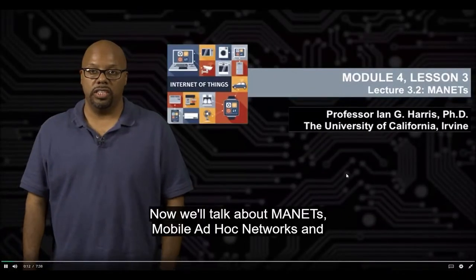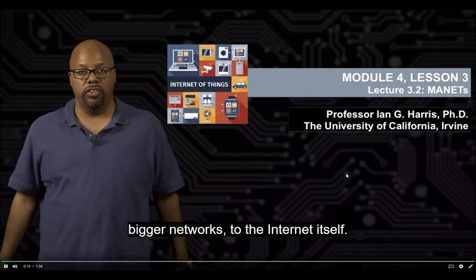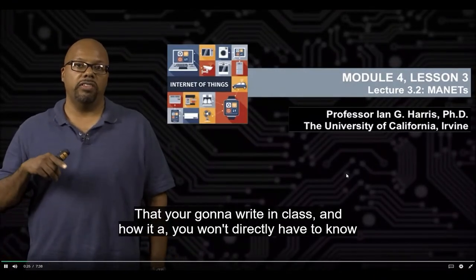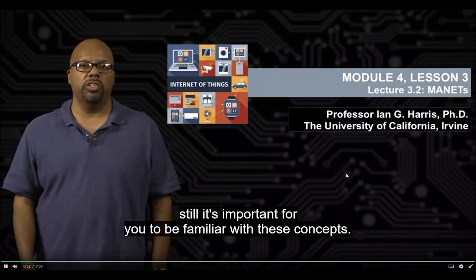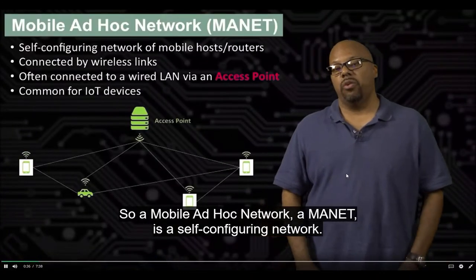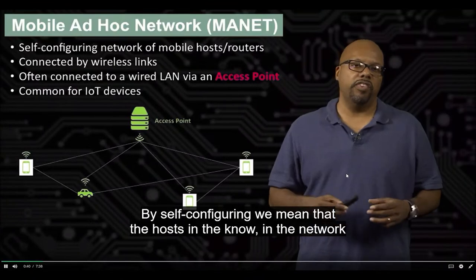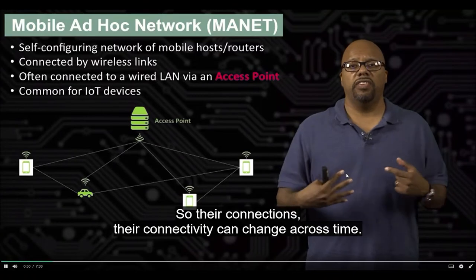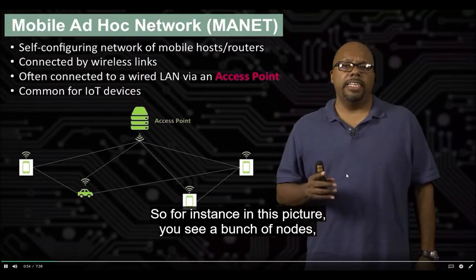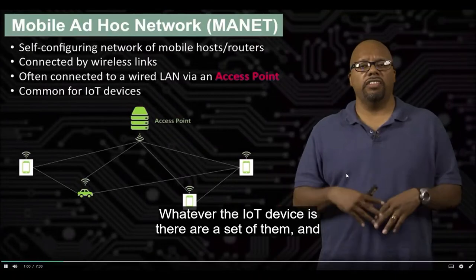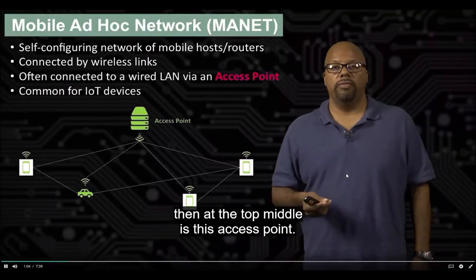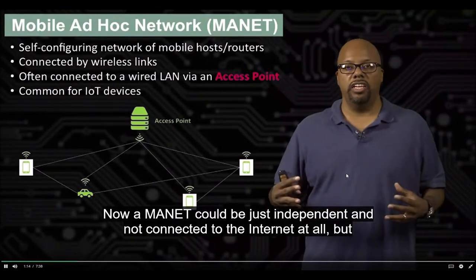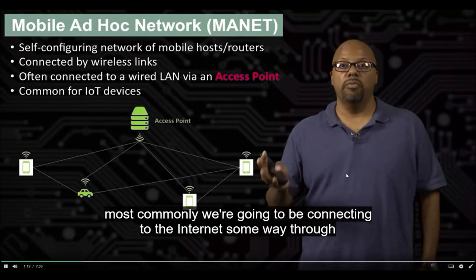Now we'll talk about MANETs — mobile ad hoc networks — and how they're used to connect Internet of Things objects to bigger networks and to the internet itself. A mobile ad hoc network is a self-configuring network, meaning the hosts configure themselves because they're moving around all the time, so their connectivity changes over time. In this diagram, there are nodes — cell phones, a car, IoT devices — and at the top middle is an access point that connects our MANET to the main internet.